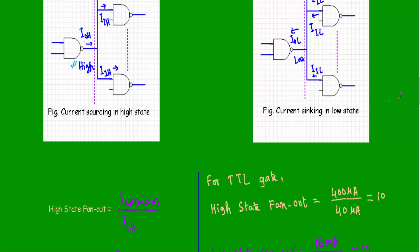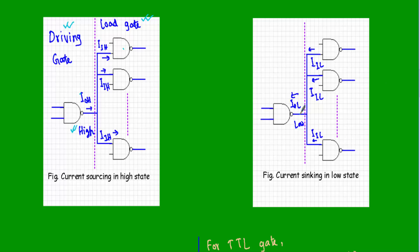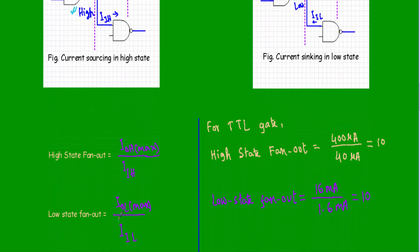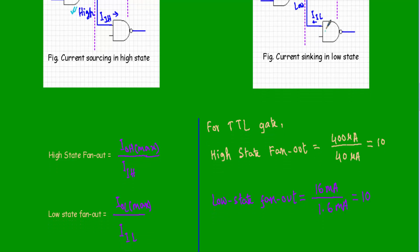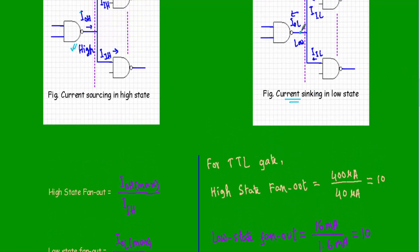When the output is at the low state, the driving NAND gate draws a total IOL amount of current, and each connected NAND gate supplies IIL amount of current. The low-state fan-out is calculated as IOL divided by IIL. This is called current sinking, because during the low state the driving gate draws current from the inputs of the other NAND gates.